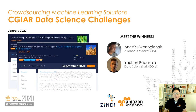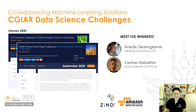One of the new areas we explored this year was the use of open data science competition platform. In partnership with ZMD and Amazon Web Services, we launched two machine learning challenges: one for identifying crop disease from pictures, and the second one on the identification of crop phenology from smartphone pictures. Please join me to congratulate our challenge winners.